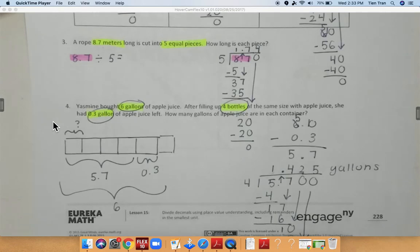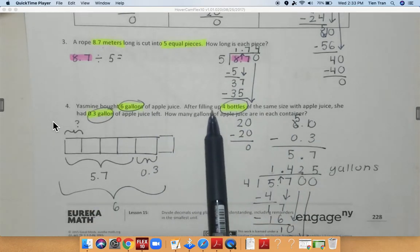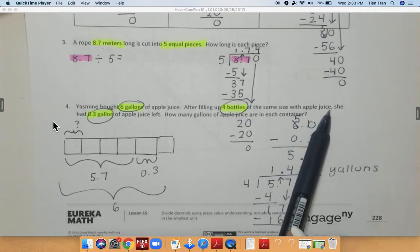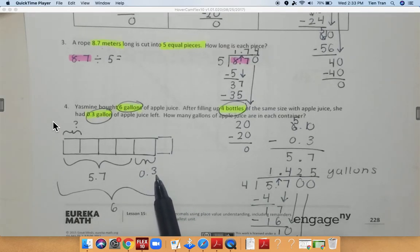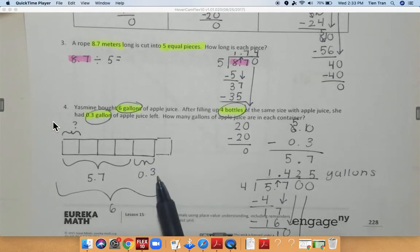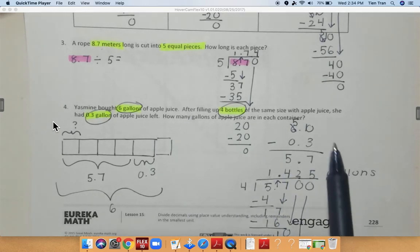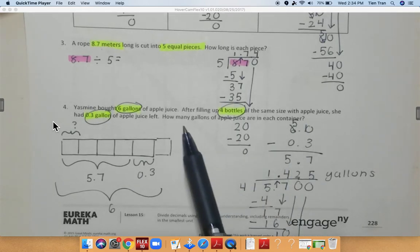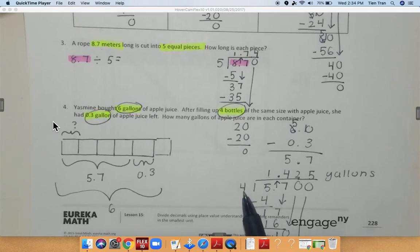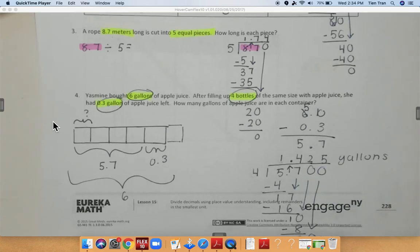I'm going to review this question over again so you guys understand it a little bit better. So we know that Yasmin bought 6 gallons, right? That's the number that we have for apple juice. After filling up 4 bottles of the same size with apple juice, she had 0.3 gallons of apple juice left. So we know her leftover was 0.3. So we are subtracting that number in order to figure out how much she filled her bottles with. So with the 4 bottles, I would divide 5.7 because that's how much she poured into the 4 bottles and divide it by 4 to see how much each bottle gets. And they're going to get 1.425 gallons.